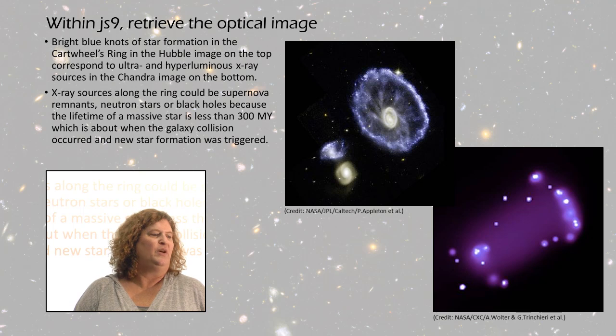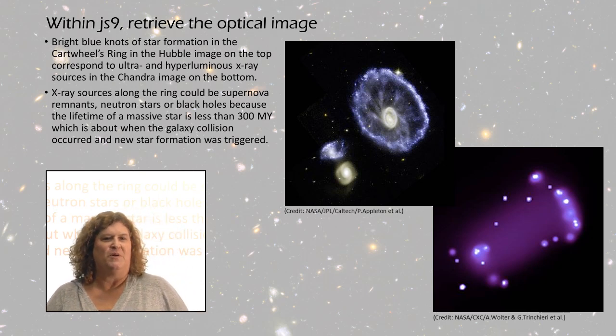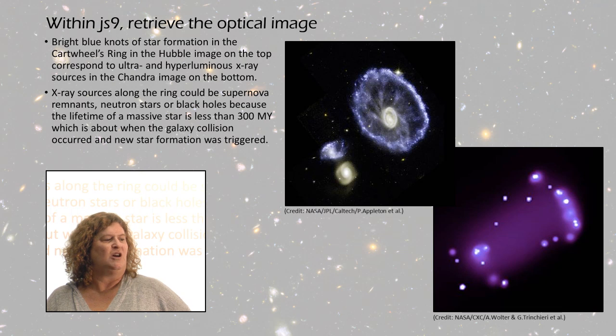Putting the optical image and the x-ray image together, the optical image is on the top, the x-ray image on the bottom. In the x-ray image, you can see those point sources are along the edge or ring of the Cartwheel Galaxy, corresponding to the little blue knots in the Hubble picture. At the bottom, in the left-hand corner, there are some more point sources that probably correspond to those two galaxies in the bottom left corner of the Hubble image.